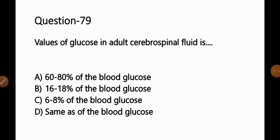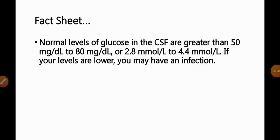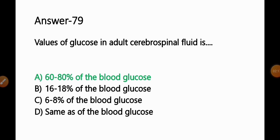Question No. 79: Values of glucose in adult cerebrospinal fluid — Option A: 60–80% of the blood glucose level; B: 16–18%; C: 6–8%; D: Same as blood glucose level. Normal CSF glucose is greater than 50–80 mg/dL (2.8–4.4 mmol/L). Since normal blood sugar is 70–110 mg/dL and CSF glucose is 50–80 mg/dL, the CSF glucose is approximately 60–80% of blood glucose. Option A is the correct answer.